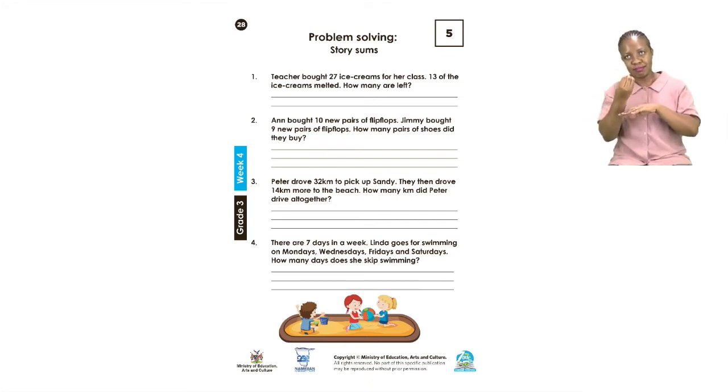So that means the days of the week that she does not go for swimming are Tuesdays, Thursdays and Sundays. So we have Monday she goes for swimming and then Tuesdays she does not go for swimming. Wednesdays she goes for swimming and then Thursdays she does not go for swimming. Friday and Saturday she goes for swimming and then Sunday she does not go for swimming. So you are going to write those days down the ones that she skips swimming.